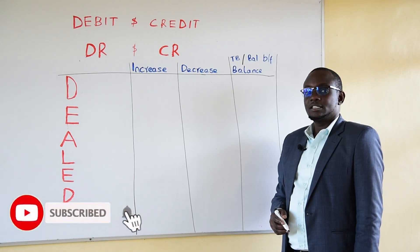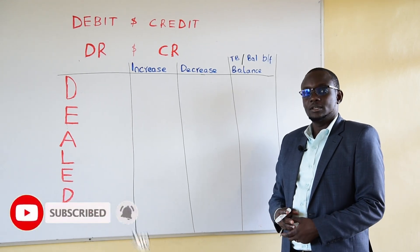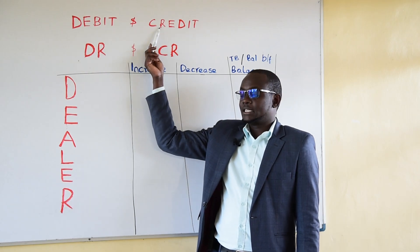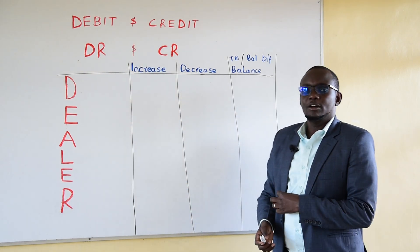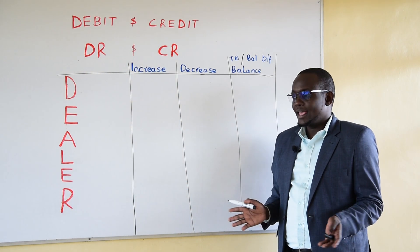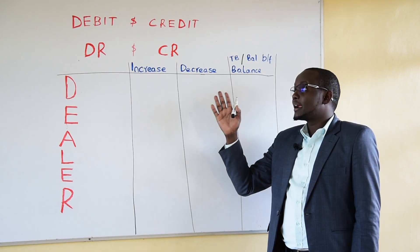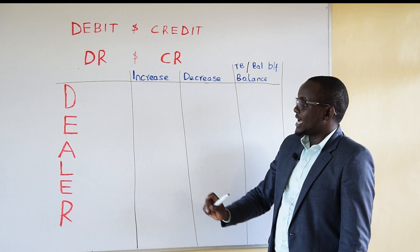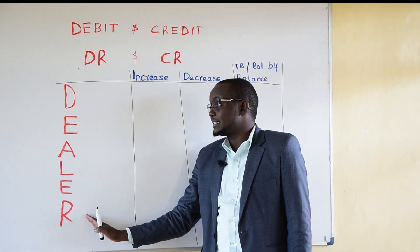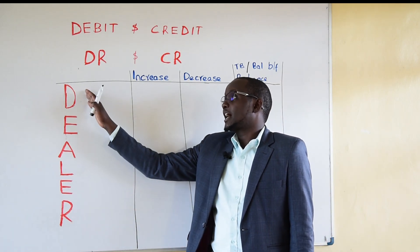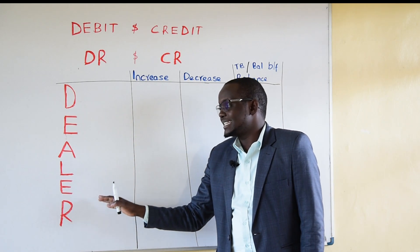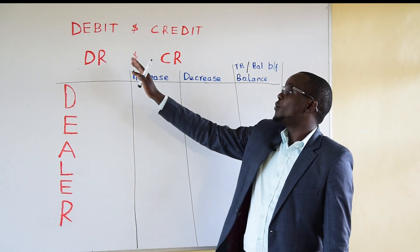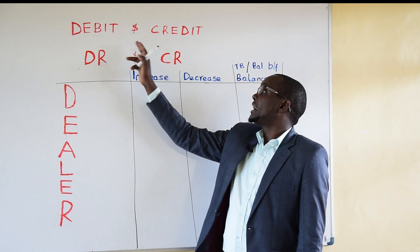Hello guys, today we want to look at what is a debit and what is a credit. I want to show you a very simple way that you can memorize how to know when to debit. I have named it dealer analysis. Dealer analysis is not an accounting concept — it is just a way to remember when to debit and when to credit.